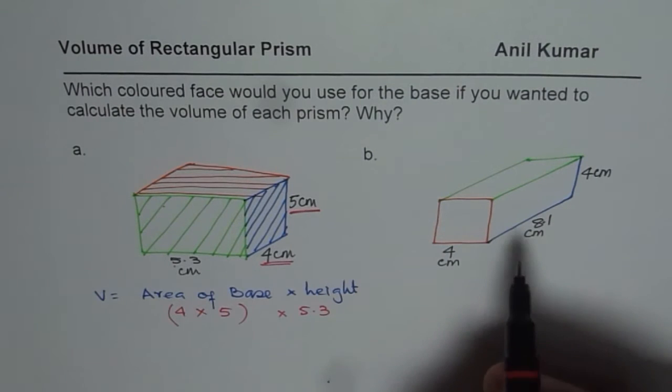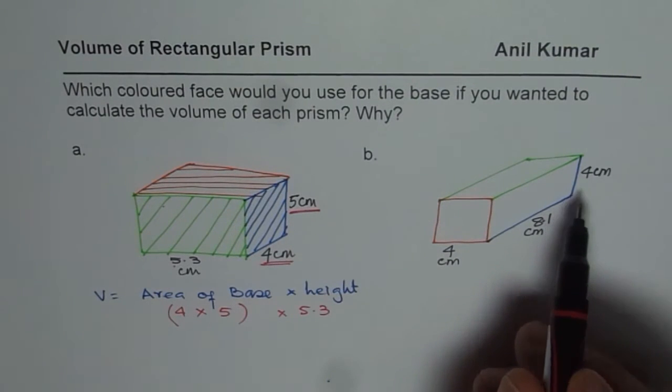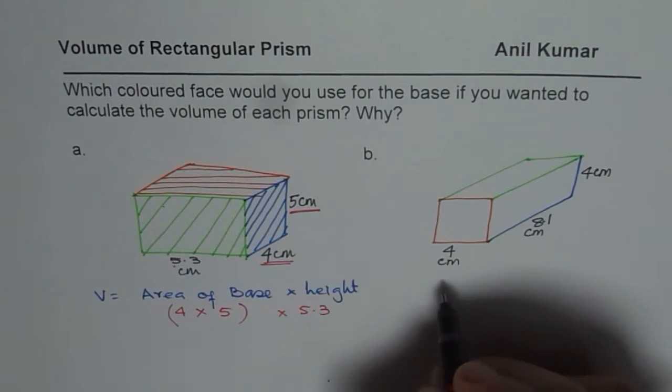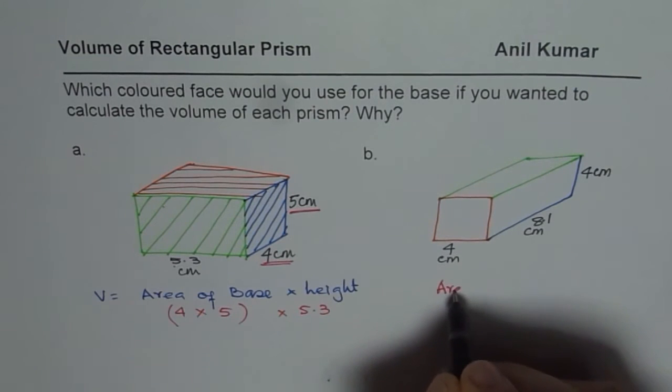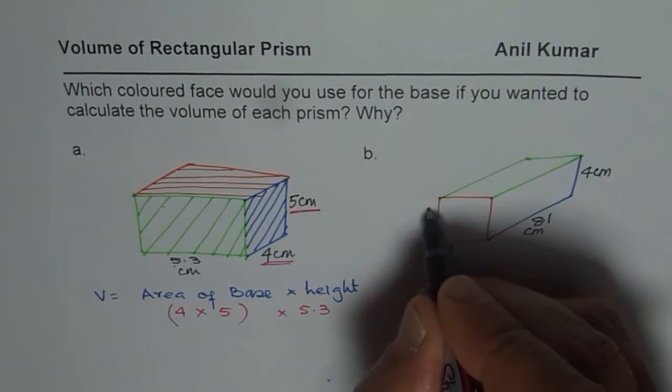In the second figure, we have 4, 8.1 as the length and then height of 4. So in this case, if you are given a choice, then area of base we could take as 4 times 4. Think this 4 is 4 here, correct?